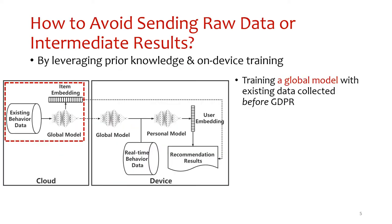How can we reassure users that recommenders have no or least privacy leakage? The most straightforward answer is to make sure that no data, whether raw data or intermediate results, are sent out of the devices during recommendation.